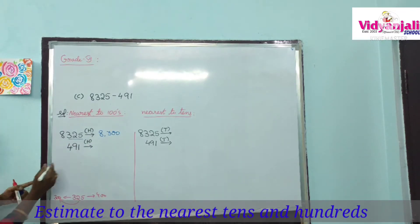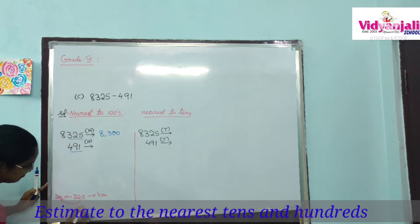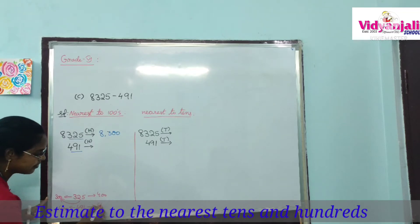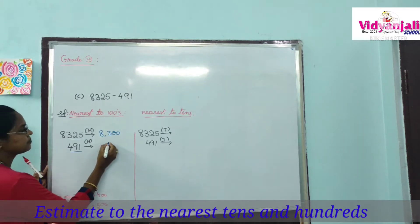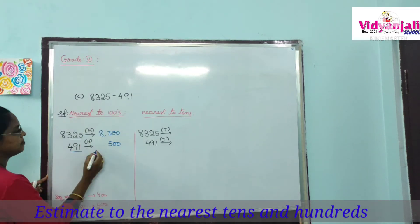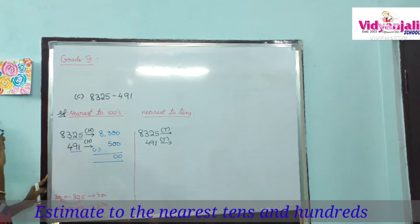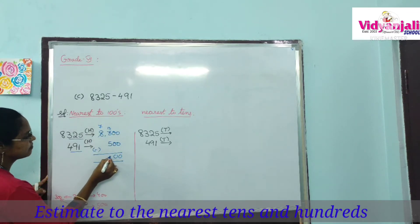Now check the second number 491. The highest place is hundreds, so we take 491. It lies between 400 and 500. Is 491 nearer to 400 or 500? It is near to 500. So we replace 491 with 500. Now subtract: 8300 minus 500. We need to borrow — 13 minus 5 gives 8. The rough estimate answer is 7800.